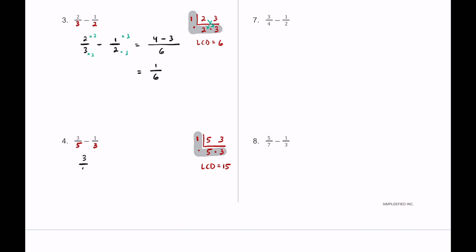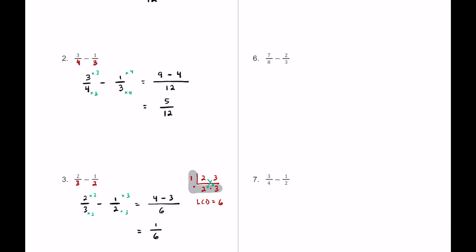Taking three-fifths minus one-third, our goal is to make both fifteenths. The five multiplies by the diagonal of three and the three multiplies by the diagonal of five, so multiply three-fifths by three over three and one-third by five over five. Three times three is nine, one times five is five, so nine minus five equals four — giving four-fifteenths, which can't be simplified.